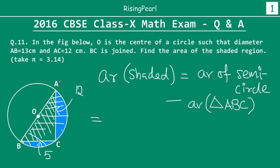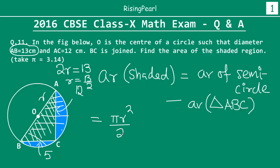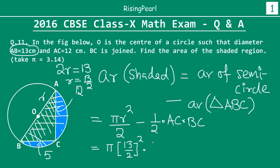We know AB is the diameter = 13, so 2R = 13, meaning radius R = 13/2. The area of a semicircle is πR²/2. The area of the triangle is ½ × height × base = ½ × AC × BC. So the area of the shaded region = πR²/2 − ½ × 12 × 5. We now know all the values.